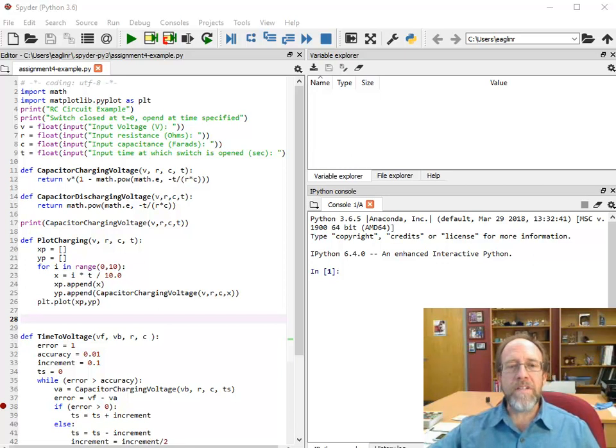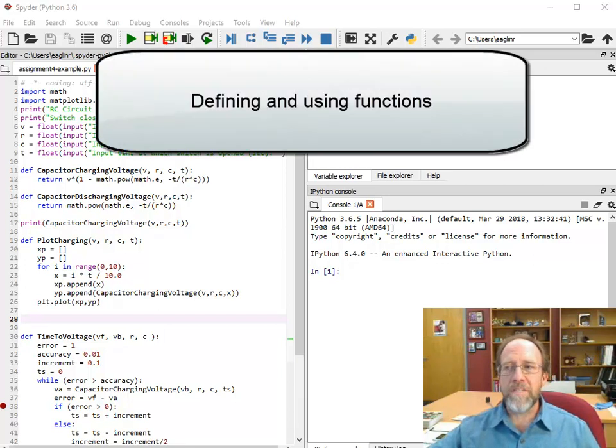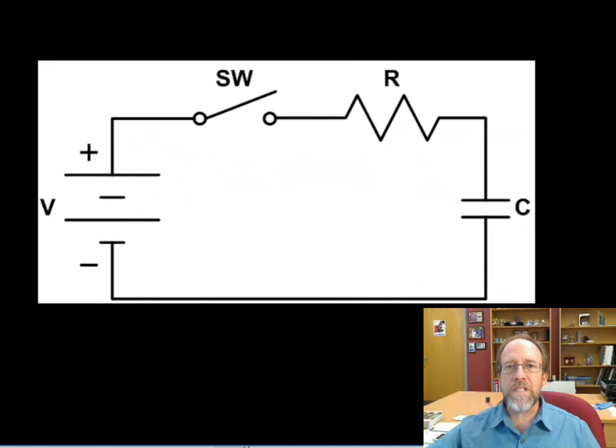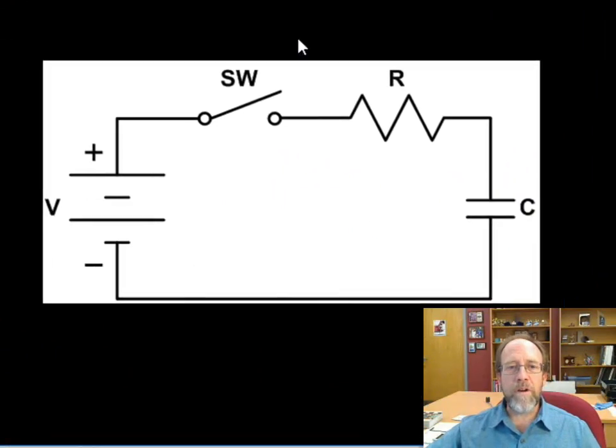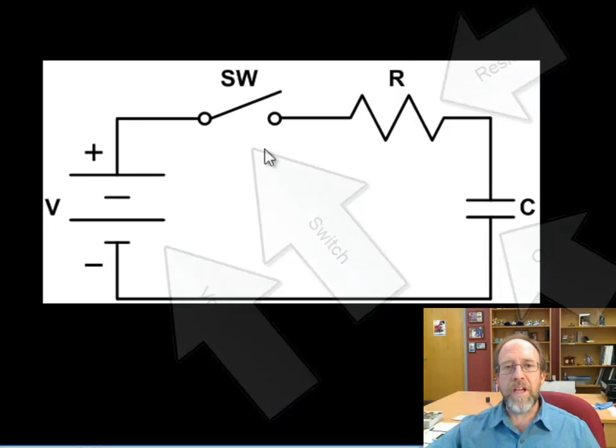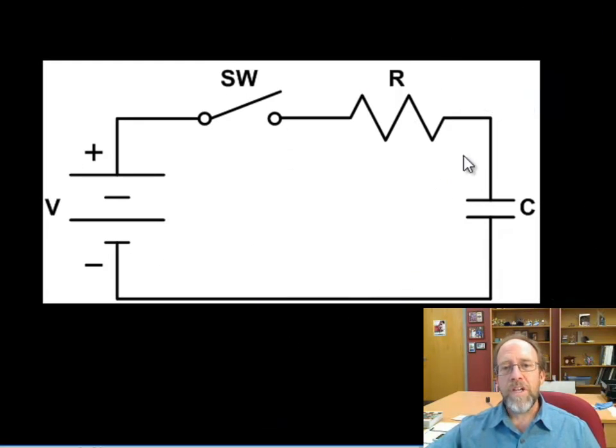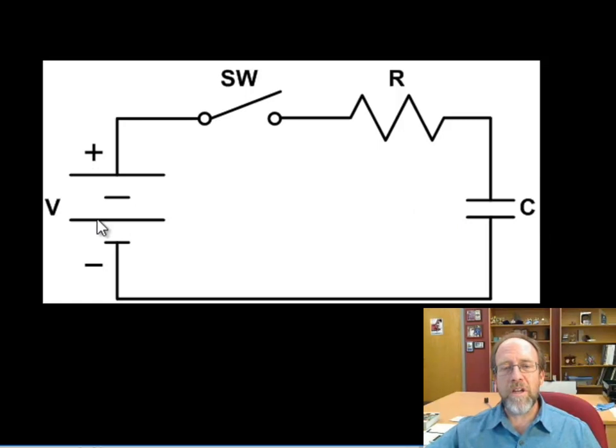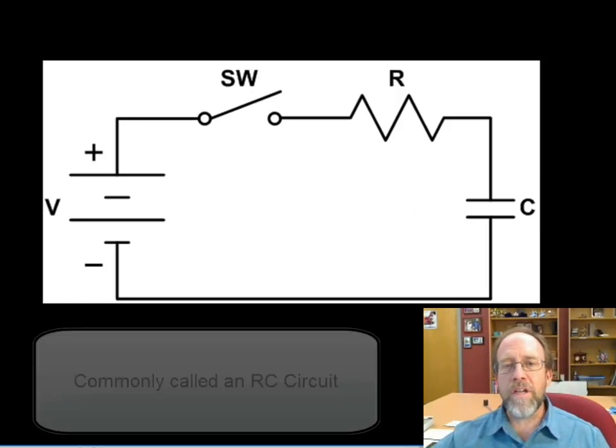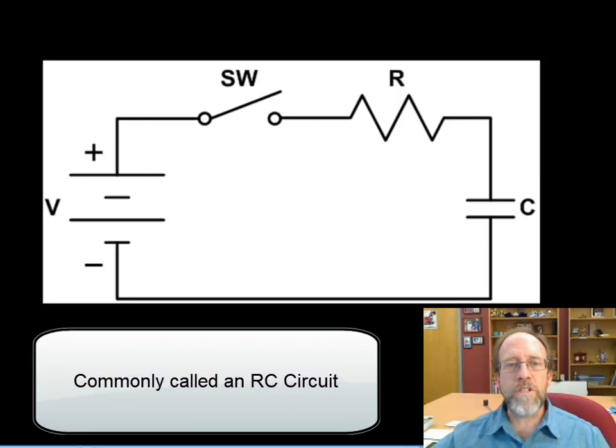Today's lecture is on defining functions. First, let's look at the problem we're going to solve. I picked this problem because it's straightforward - the standard RC circuit. Here's an RC circuit with a voltage, basically a battery, a switch, a resistor, and a capacitor. When you close this switch, the capacitor will charge based on the voltage and resistance. We're going to look at that.